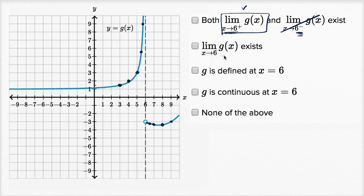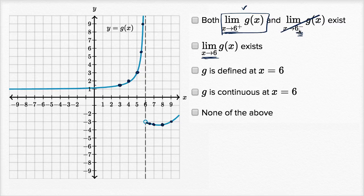The next statement says the limit as x approaches six of g of x exists. Well, the only way that the limit exists is if both the left and the right limits exist and they approach the same thing. Our limit as x approaches six from the left-hand side does not even exist, so this cannot be true.